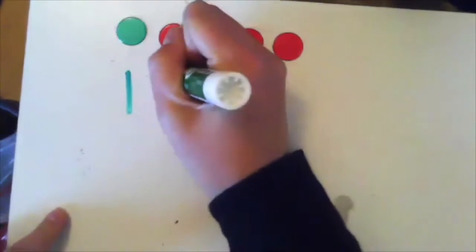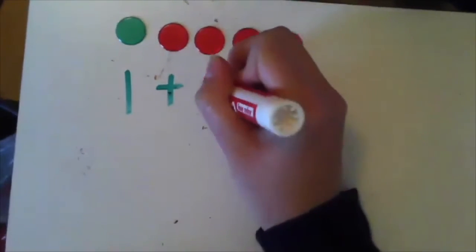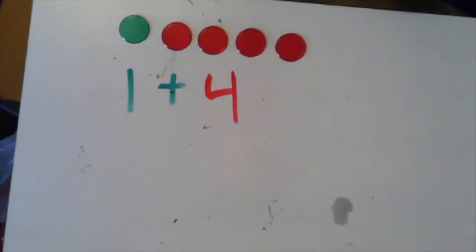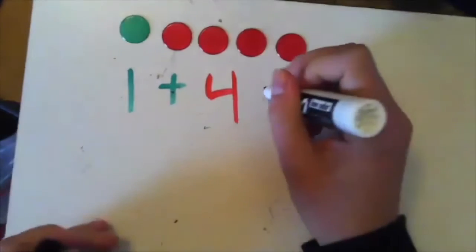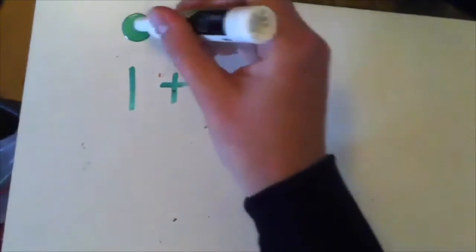Let's try another one. What if I have one green chip and four red chips, one, two, three, four? Let's write a number sentence for that. One green chip plus four red chips equals how many chips in all? That's right, it's five. One, two, three, four, five.